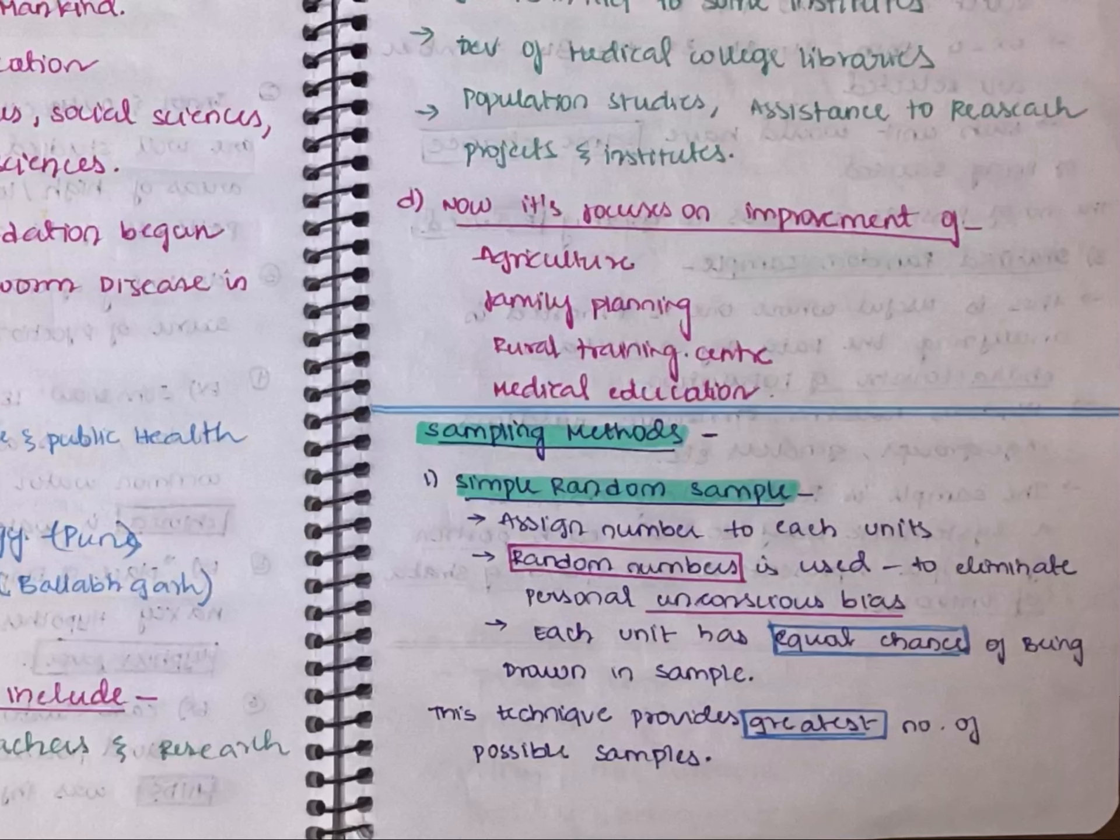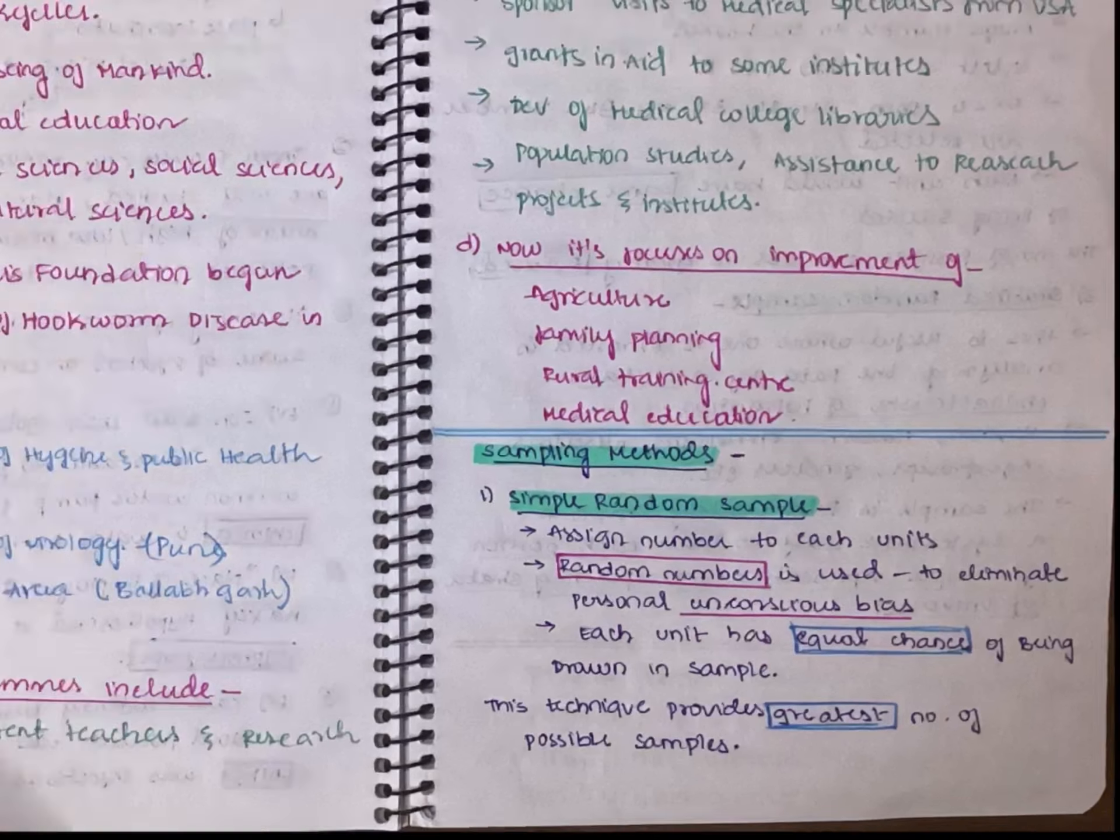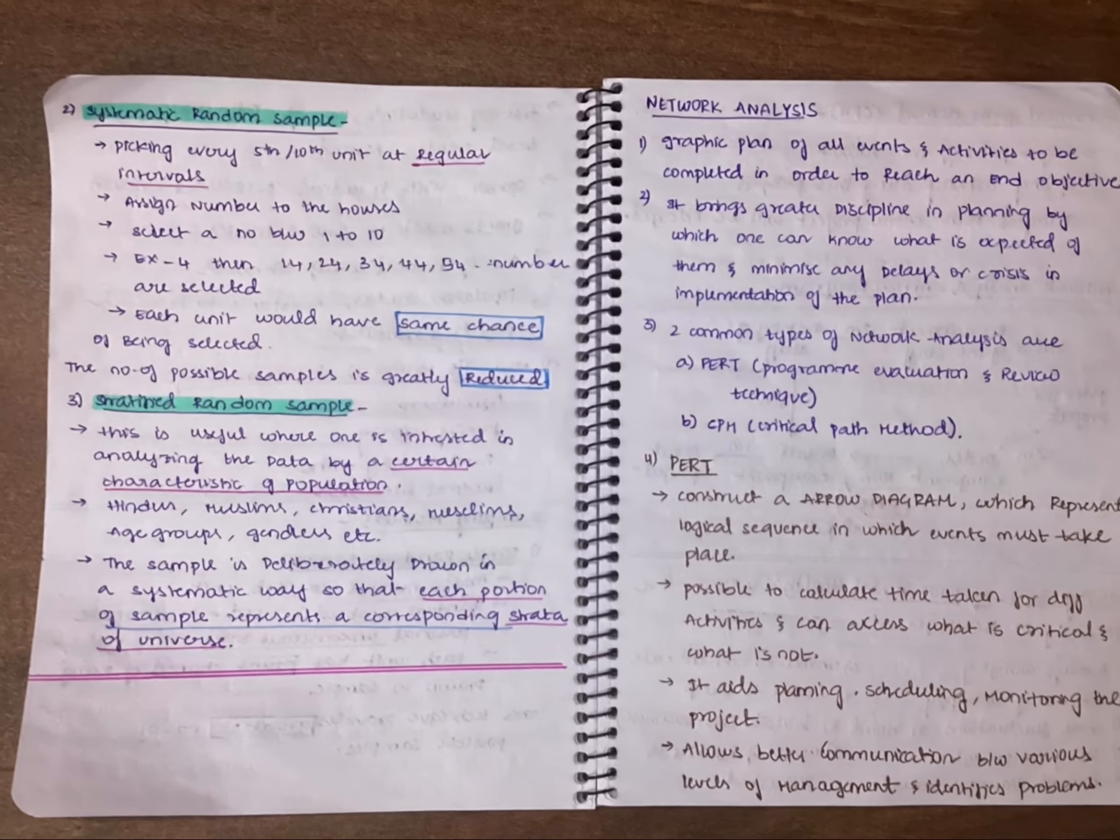From the number 1 to 150, everyone has equal chance of being drawn into the sample. It is just based on their luck. This technique provides the greatest number of possible samples. From 1 to 150, everyone has equal chance, providing greater number of possible samples.